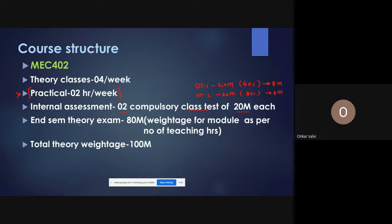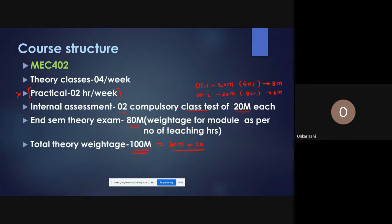The end semester theory exam is for 80 marks. The total theory weightage is 100 marks: 80 marks from the final theory exam and 20 marks from the unit tests, which will be the average of the two tests. Therefore, this subject is for 100 marks total.